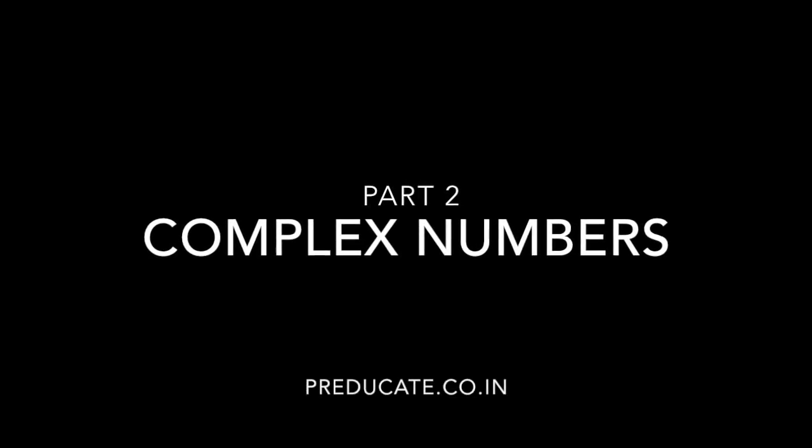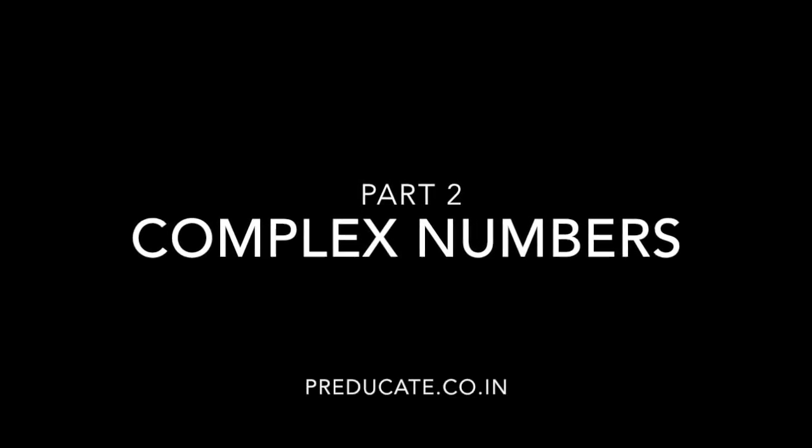Hello students, we will study a little bit about complex numbers. Complex number z equals a plus iota b, where a is the real part of the complex number and b is the imaginary part of the complex number.